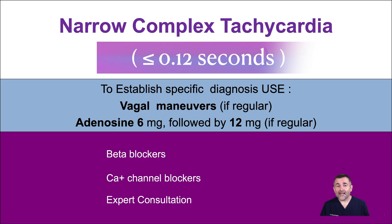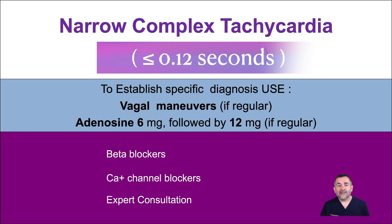Adenosine slows electrical conduction through the AV node and terminates about 90% of re-entry tachycardias within two minutes. Before adenosine administration, please explain the process to the patient. Adenosine needs to be given as a rapid IV push followed by a 20 ml flush of saline, and then the arm needs to be elevated. Remember, adenosine has a very short half-life. Although it doesn't terminate atrial flutter or atrial fibrillation, it will slow the AV conduction, allowing for the identification of flutter or fibrillation waves, thereby allowing confirmation of the underlying tachycardia.